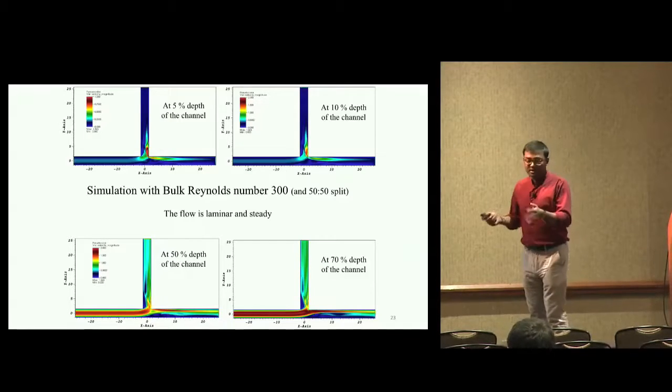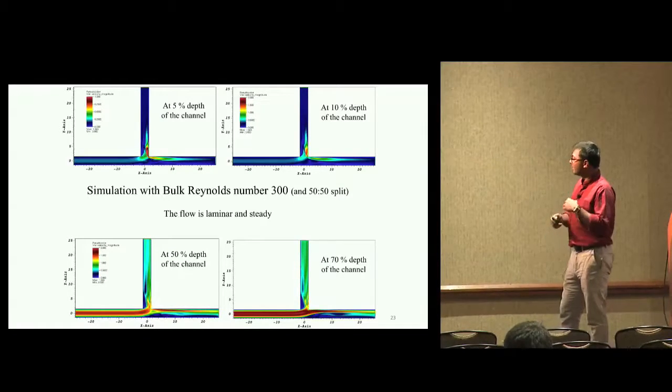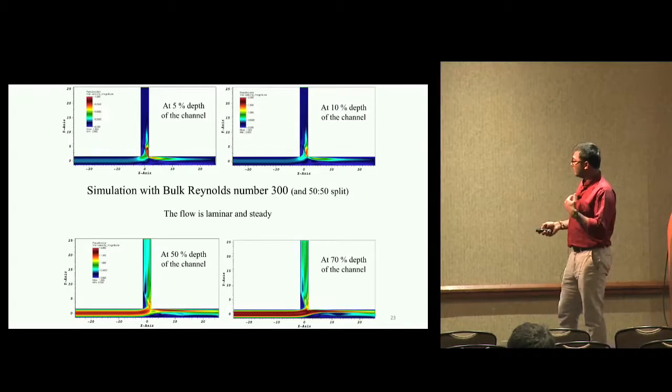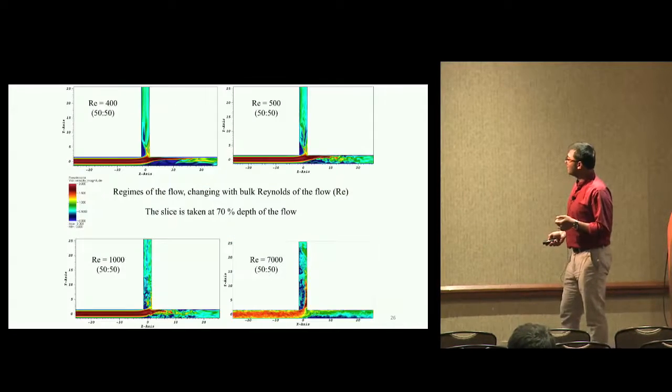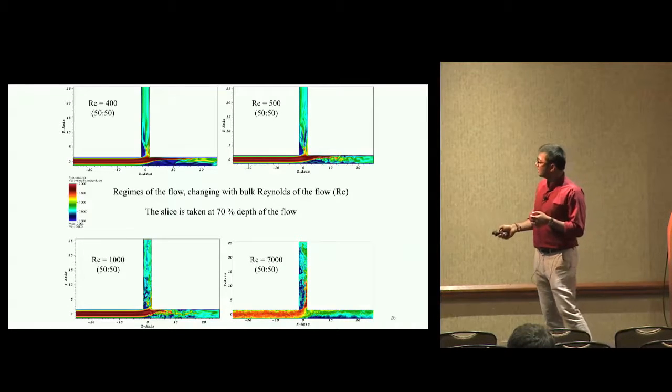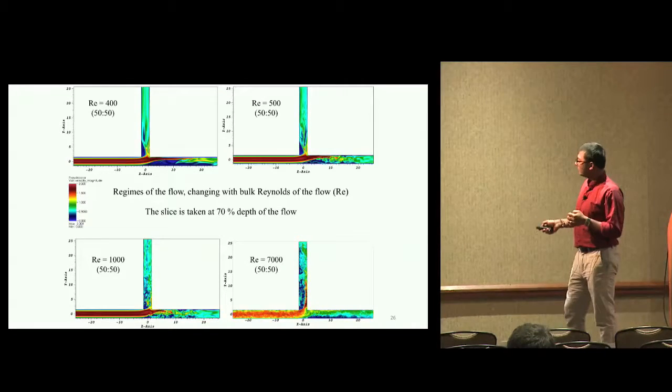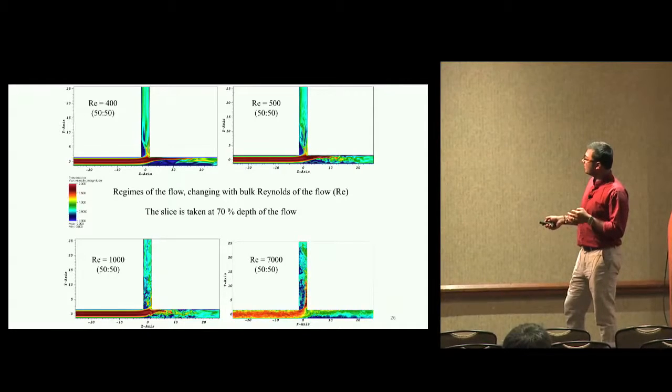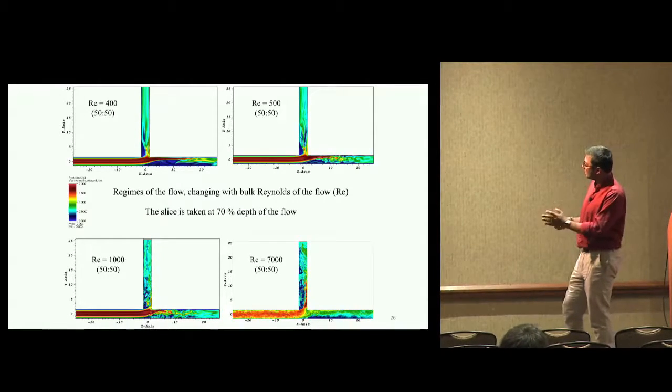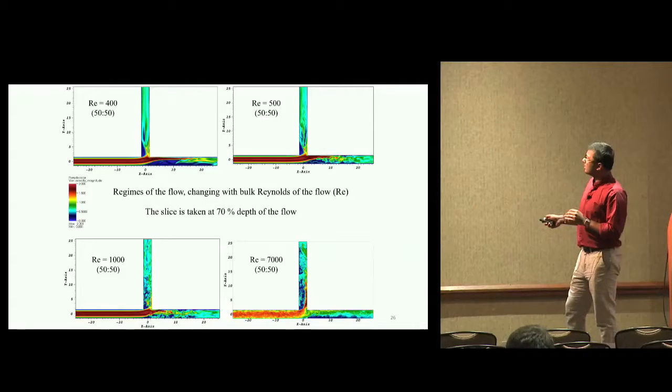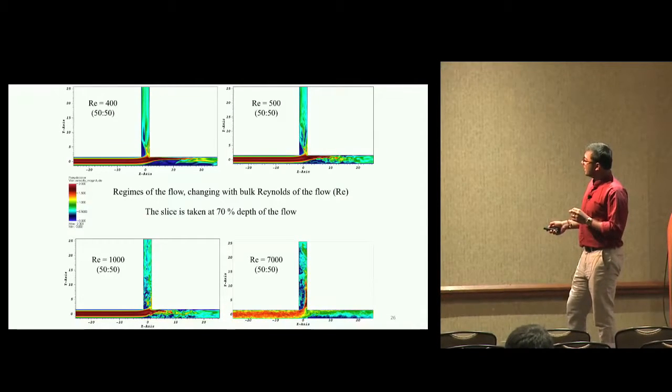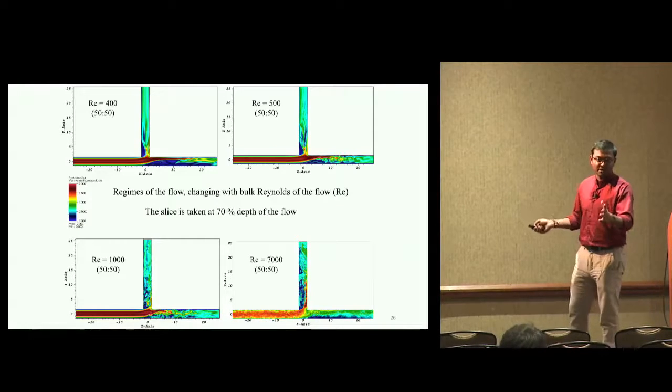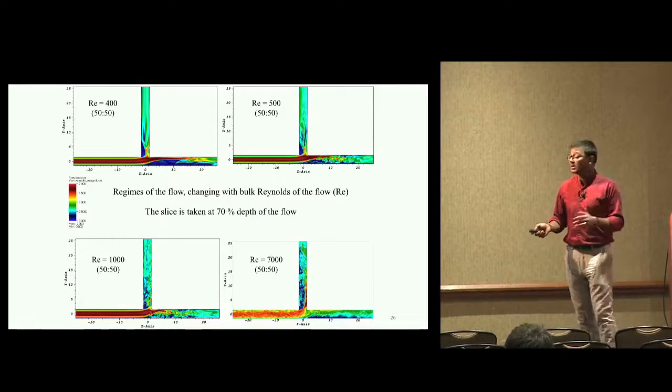We did it across different Reynolds numbers, and similar results showed up for a laminar case. Another interesting thing we found was that when we went across different Reynolds numbers, at Reynolds number of 500, even though the flow that comes in is laminar, after bifurcation the flow is unsteady or turbulent.